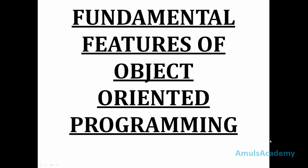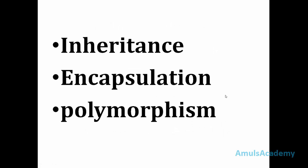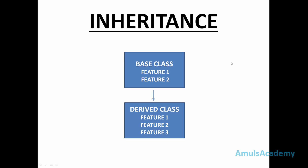Hello guys and welcome to Python programming tutorials by Amuls Academy. We are discussing about the fundamental features of object oriented programming. In the previous tutorial we were discussing about inheritance — there will be a base class and we can create a class using this base class, with a single base class and single derived class. So we can say this as single level inheritance.